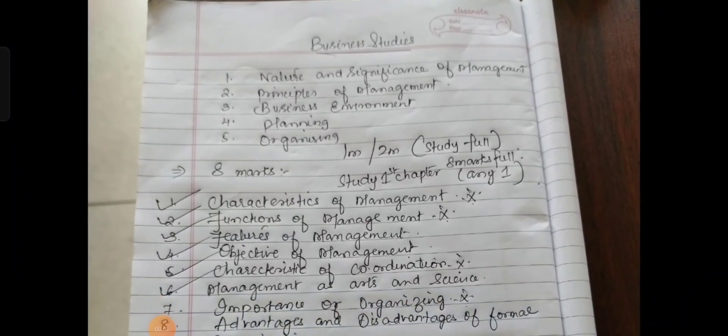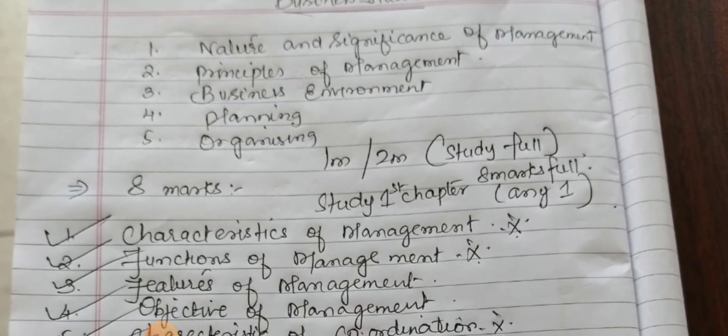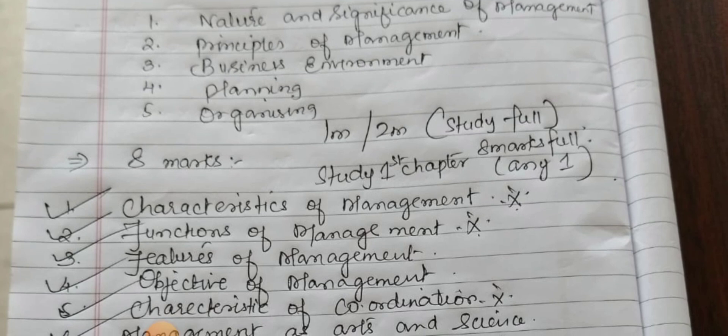Hello students, welcome back to my channel Quest for Knowledge. This is your FA1 portion: nature and significance of management, principles of management, business environment, planning, and organizing. Now, what are the importance? Eight marks and four marks I can share.